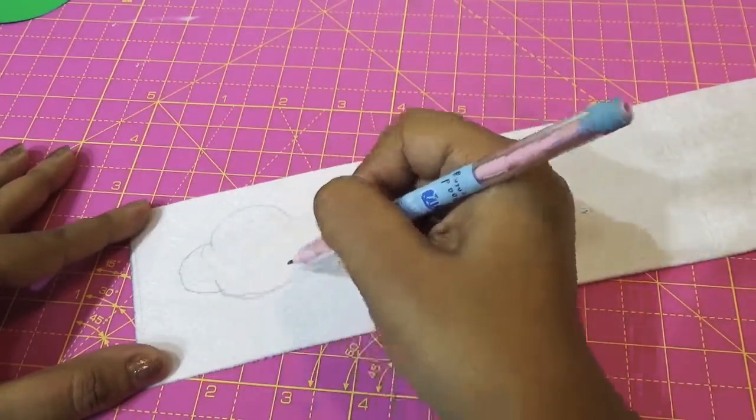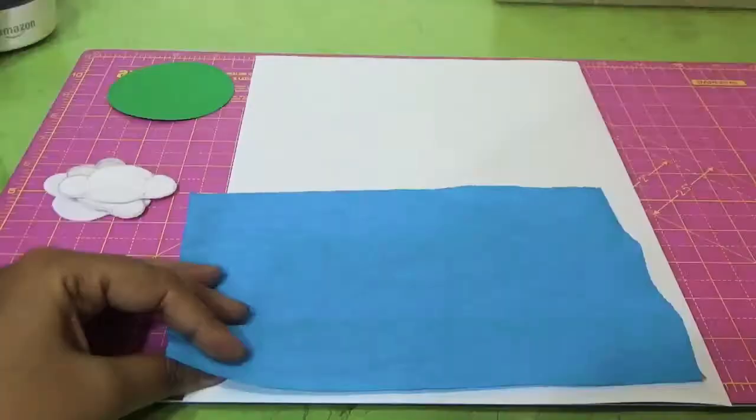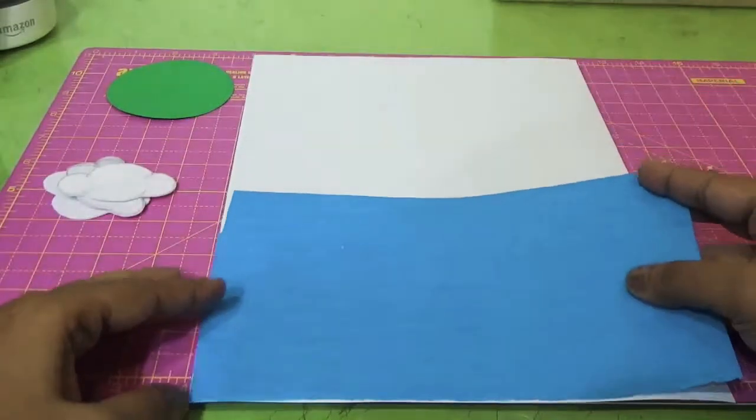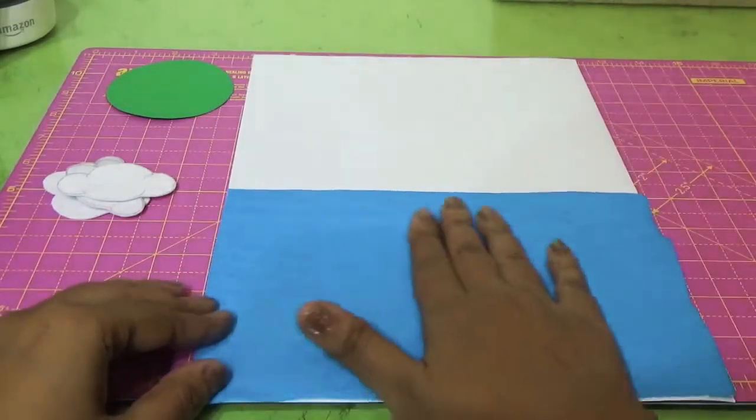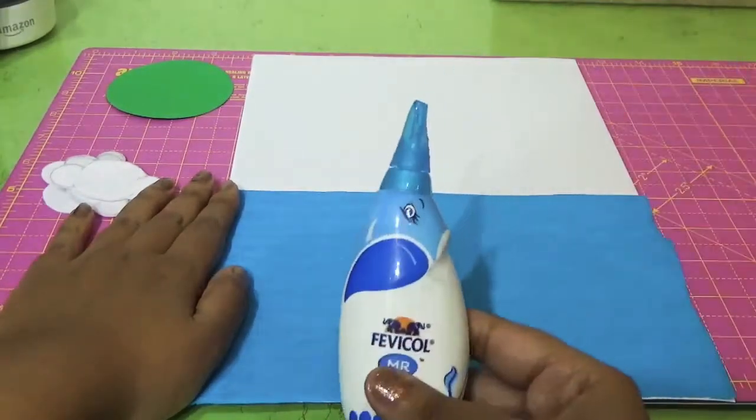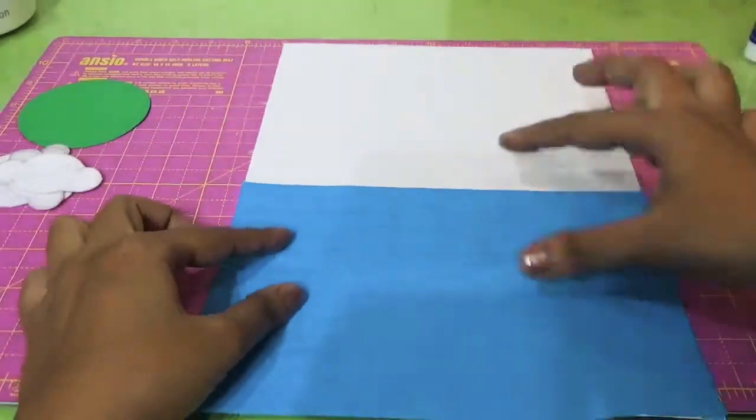Now we will stick the blue crepe paper sheet on the paper to give a water-like effect with Fevicol. See, it will look like that.